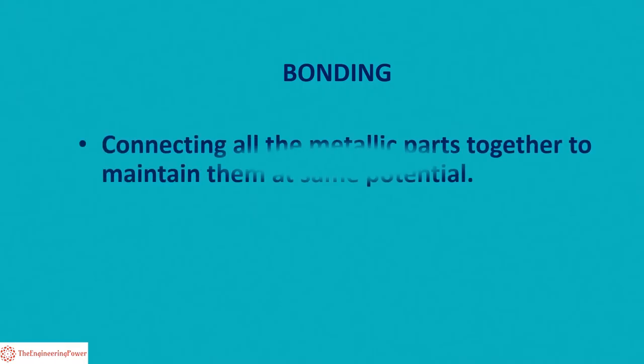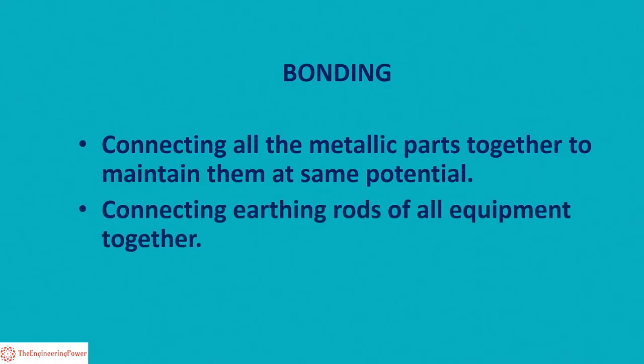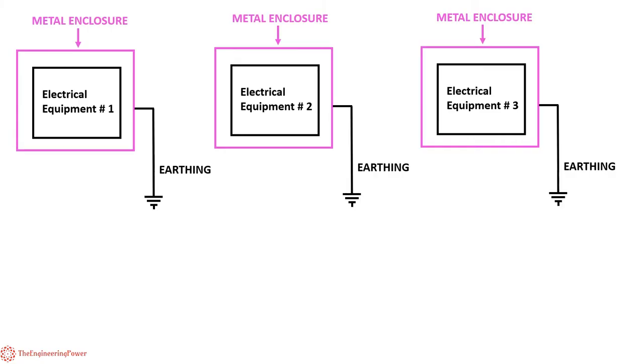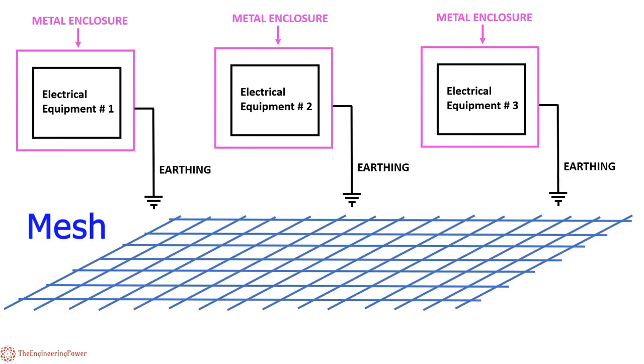By bonding we mean to connect all the metallic parts in the work area together to maintain them at same potential, that is ground potential. Basically, we are connecting the earthing rods of all the equipment together. We achieve this by installing a mesh in the work area, for example the yard in a substation, and connecting the earth rods of all the equipment to the mesh, thereby achieving equipotential between all the equipment. The mesh is generally referred to as the earth mat or ground mat.